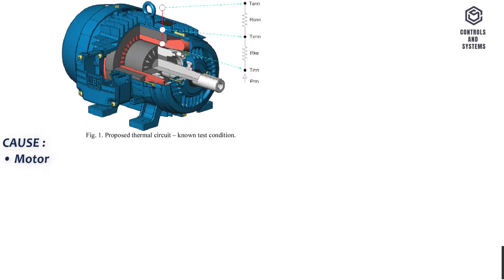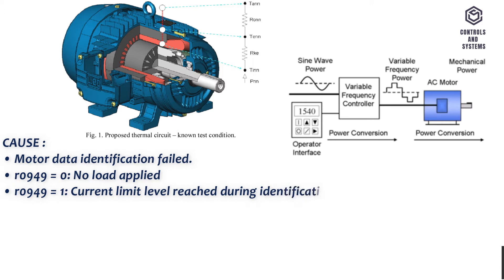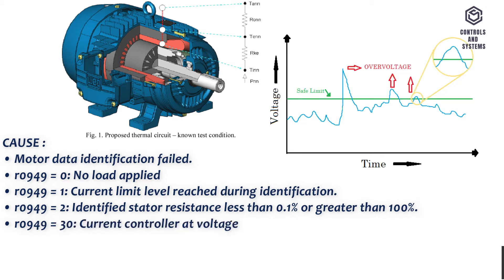Cause: Motor Data Identification Failed. R0949 equals 0: no load applied. R0949 equals 1: current limit level reached during identification.